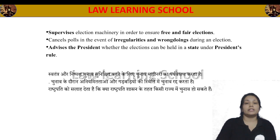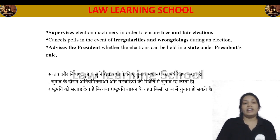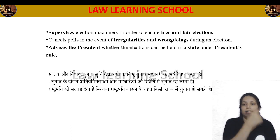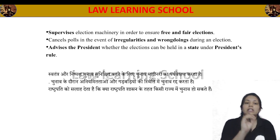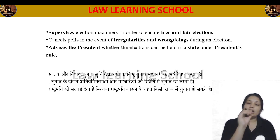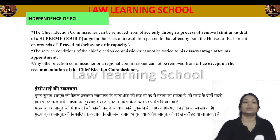If it is seen that work is not being carried out properly at a polling station, the poll can be cancelled. The Election Commission also advises the President on whether elections can be held in a state that is under President's Rule — that is, giving advice to the President during President's Rule about whether elections should be conducted.